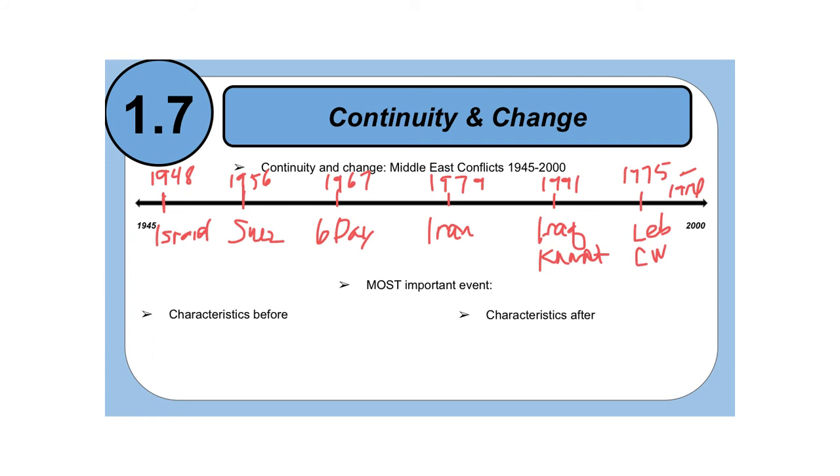Our last historical thinking skill for the day is continuity and change. Again, this is another historical thinking skill that will be highly critical for you to master in order to be very successful in IB history. In the example that's provided for you, it says continuity and change in the Middle East conflicts 1945 to 2000. I went ahead and took the liberty of putting in a couple of conflicts. This is by no means a comprehensive list at all, but this is just a quick jotting of a couple of conflicts that you could put on a timeline from 1945 to 2000 regarding Middle East conflict.